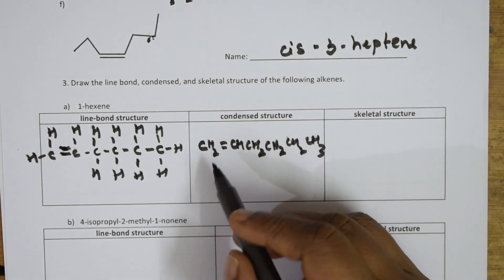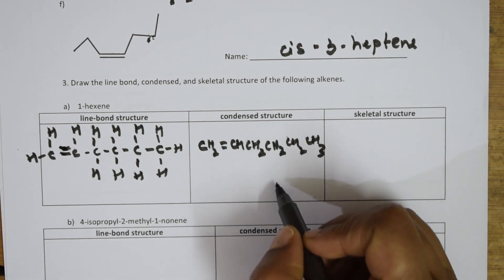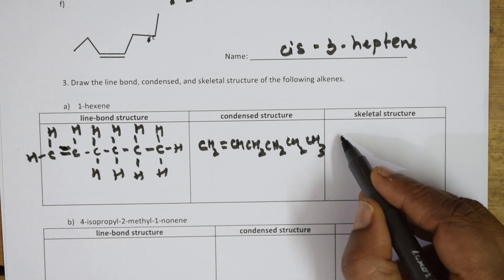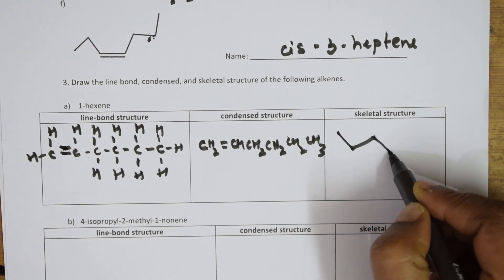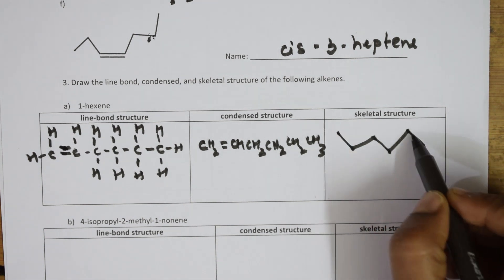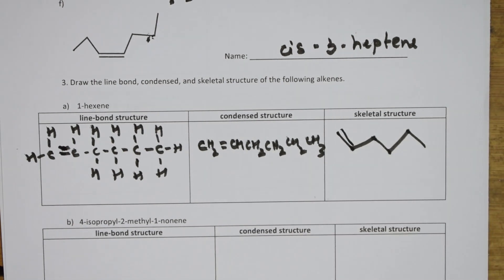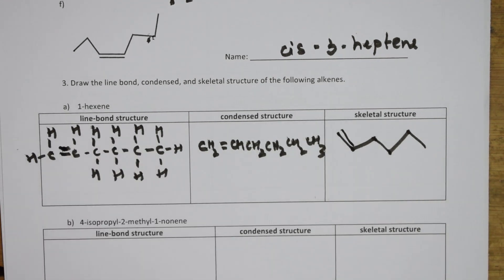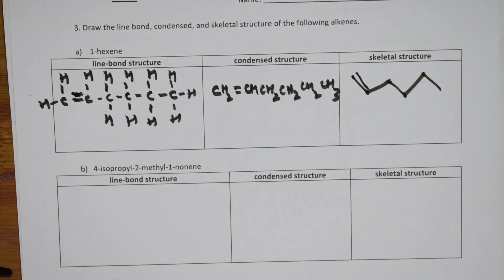For the skeletal structure, I represent the six carbons as a zigzag line: one, two, three, four, five, six. The double bond is present at the first position. This is how you represent the line bond structure, condensed structure, and skeletal structure.